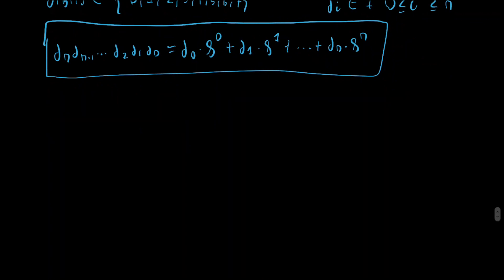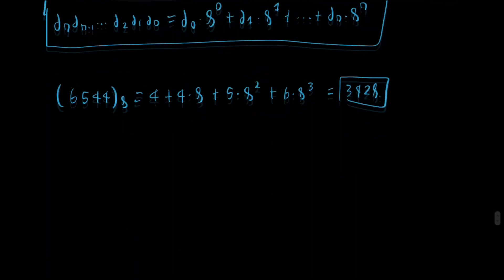And the conversion is, again, the same. If you want to convert, for example, the following number. And here we're going to specify with a subindex that we're talking about base 8, because it will be a little bit more difficult to tell the difference if we just write it in plain text like this. For example, if we have 6, 5, 4, 4 in base 8. So what this will be in base 10? This in base 10 will be 4 times 8 to the 0. So 4 plus 4 times 8 plus 5 times 8 squared plus 6 times 8 to the cube. And now the result of this computation is 3428. So again, the conversion is really the same.